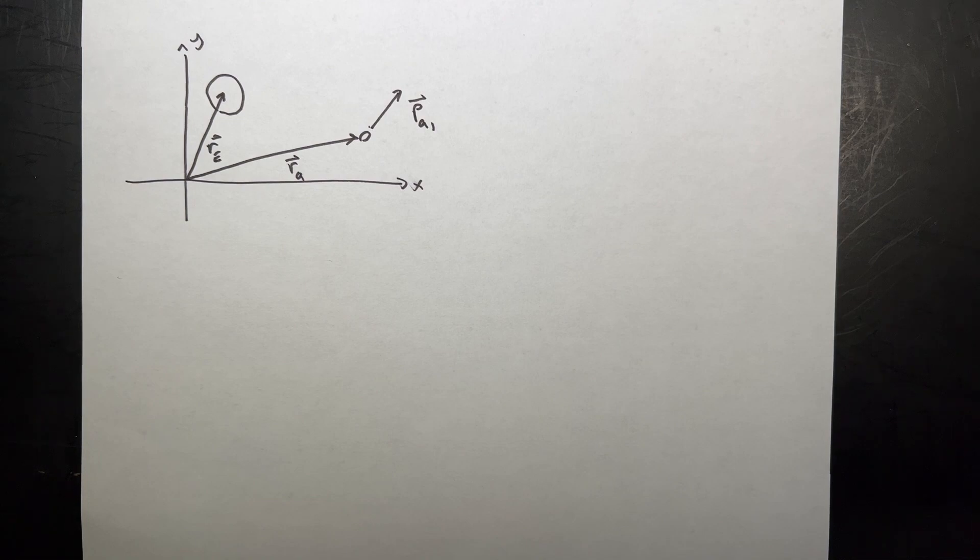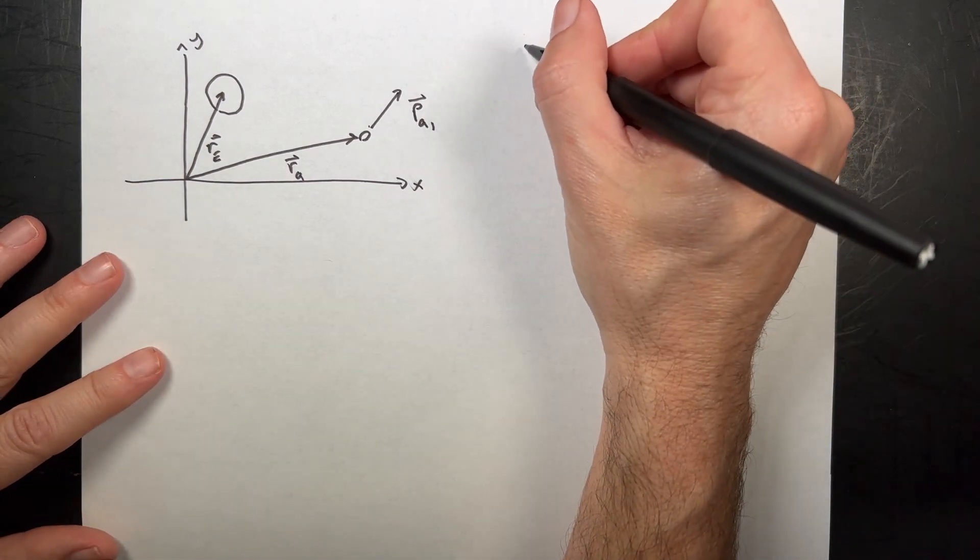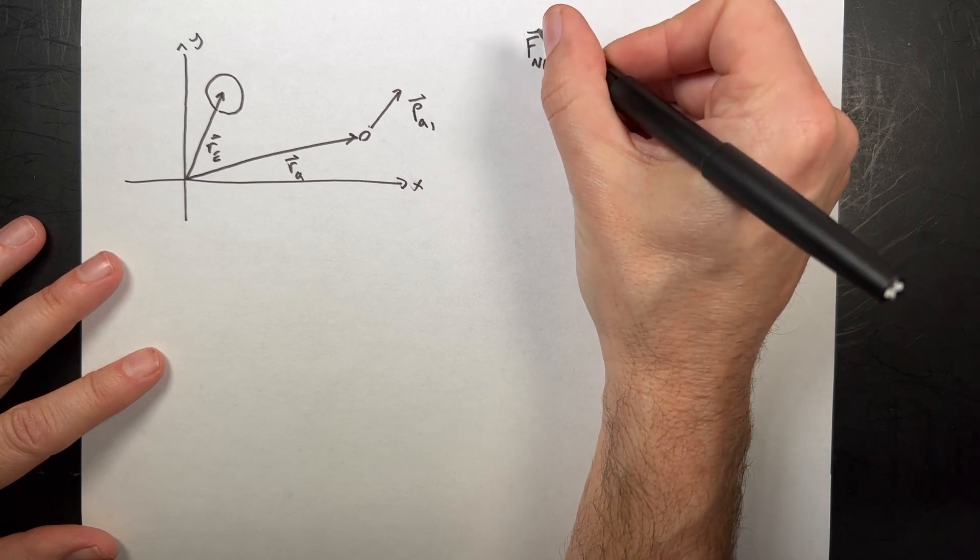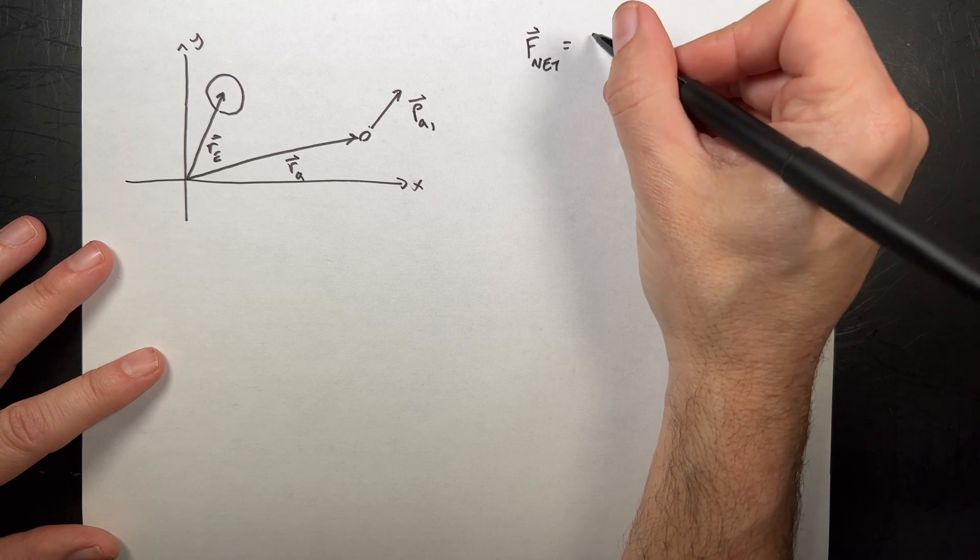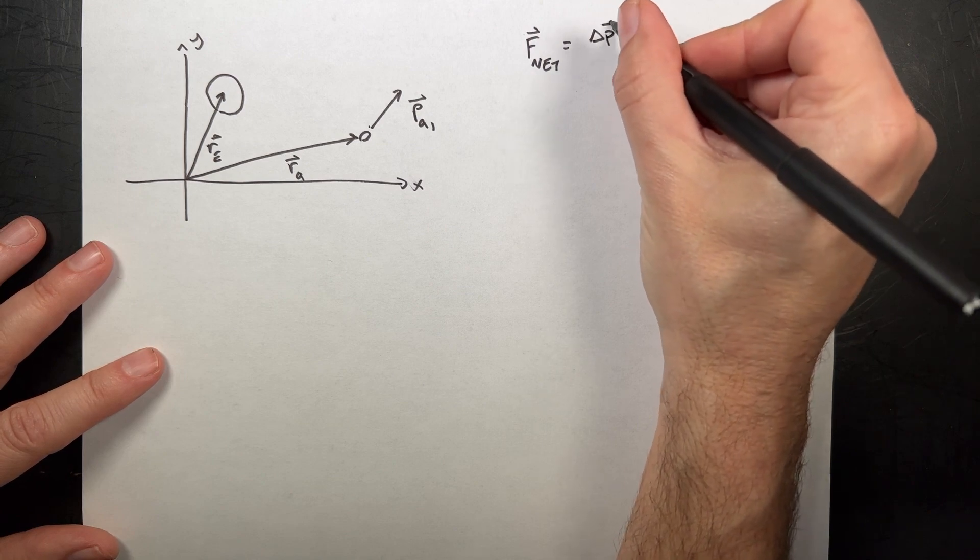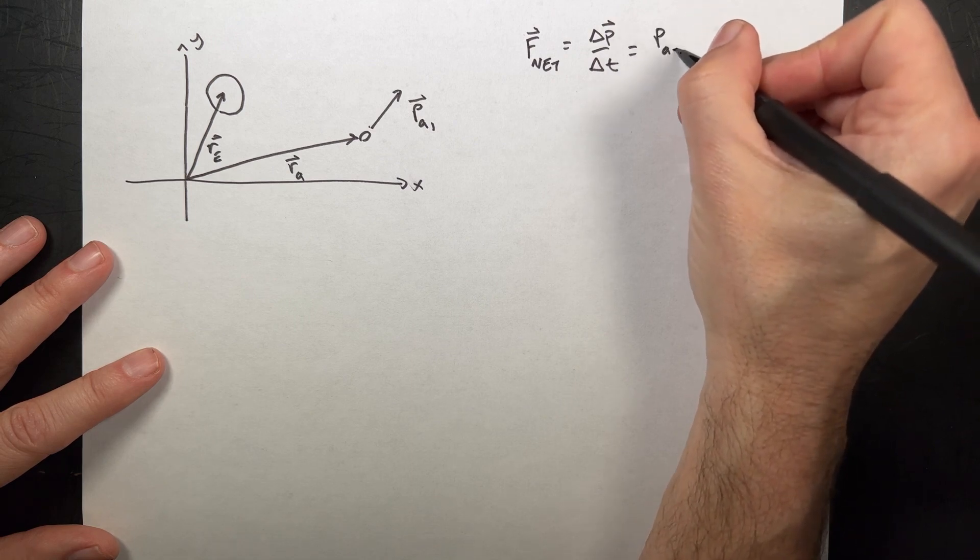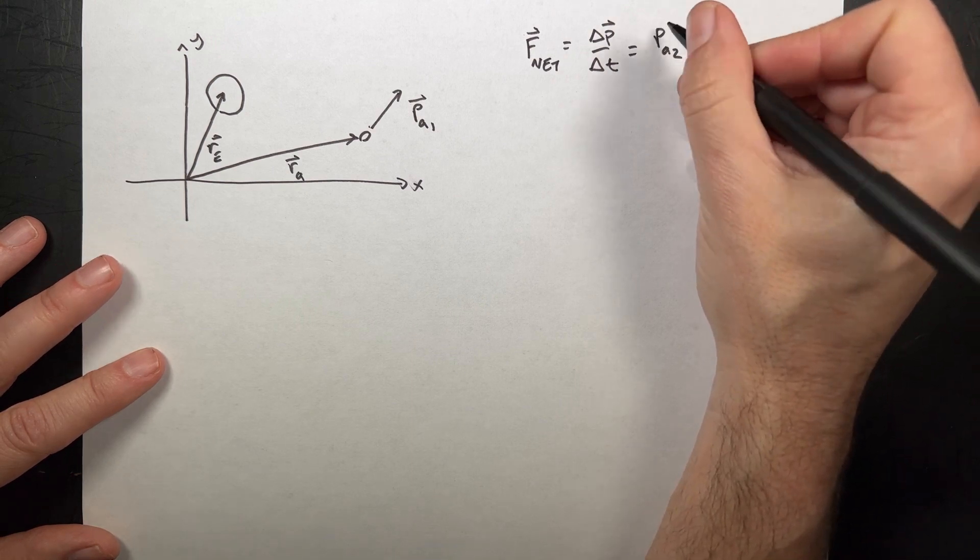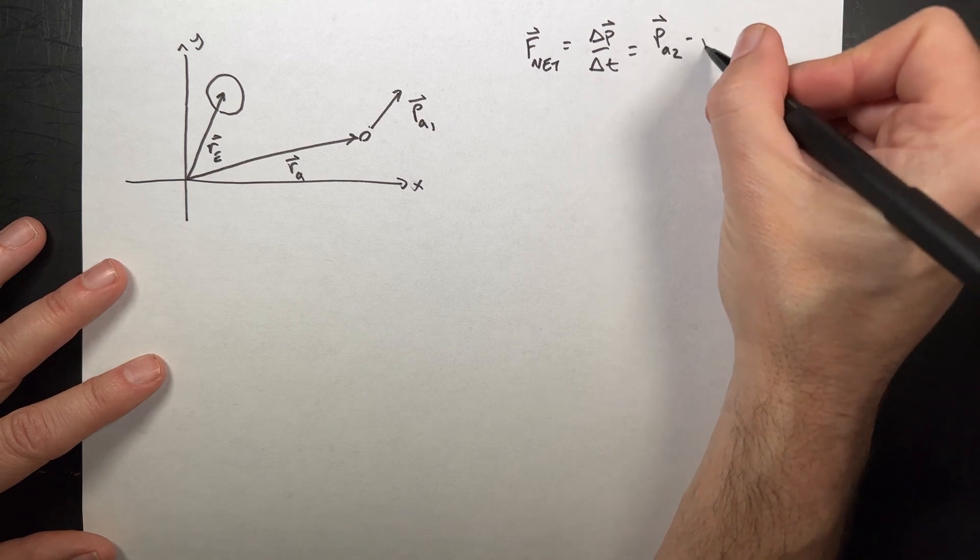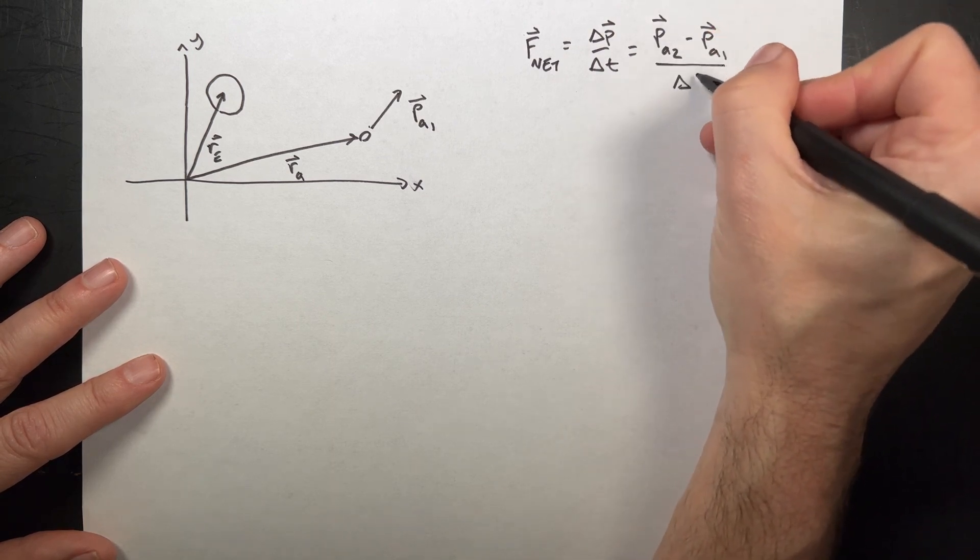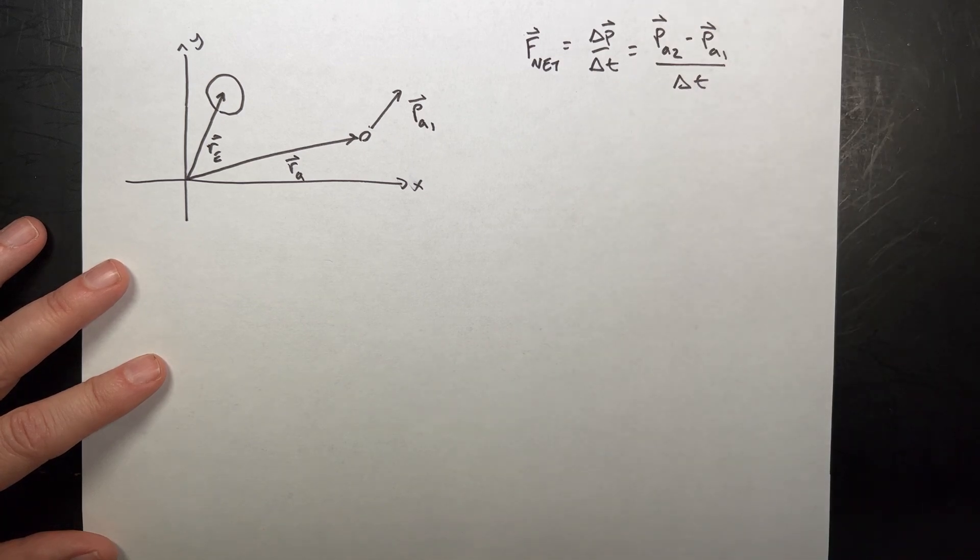And I want to find out what it is after that. So I know that the momentum principle says f net is the change in momentum with respect to time. And so I can write that as pa2, the final momentum of the asteroid, minus the initial momentum, pa1, all of that over delta t.